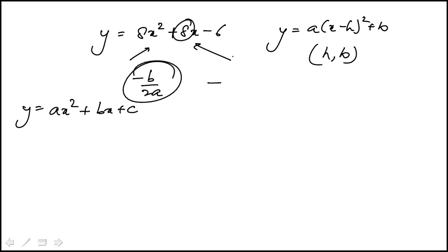So that would be minus b, a is 8, and then 2 times 8, that's minus half, which means h is minus half. And that alone would give you the answer directly, because only one answer choice has that.